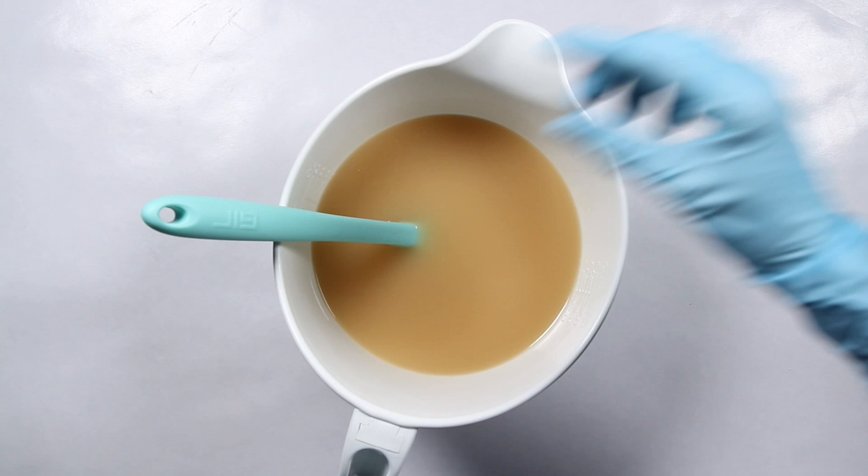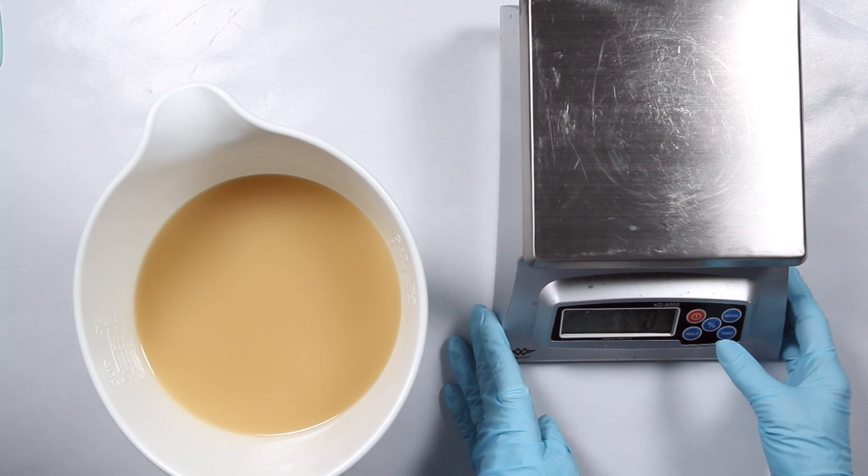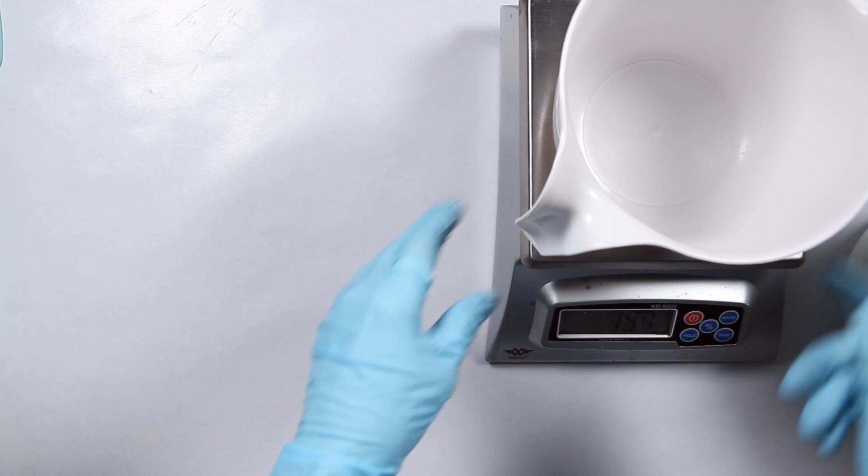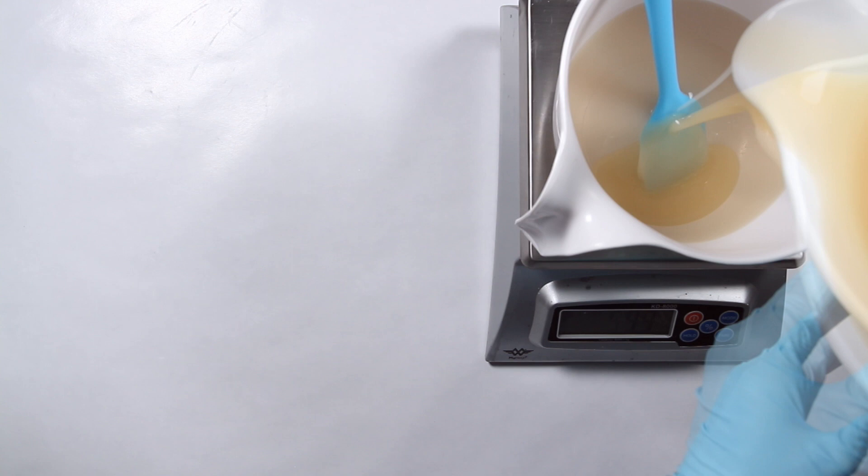In order to divide the soap and have enough for each color, I first weighed the entire batch and then subtracted the bowl weight. This gave me the total weight of the soap. I then used that number to measure out half for the white color, and the remaining batter was split into three equal parts.